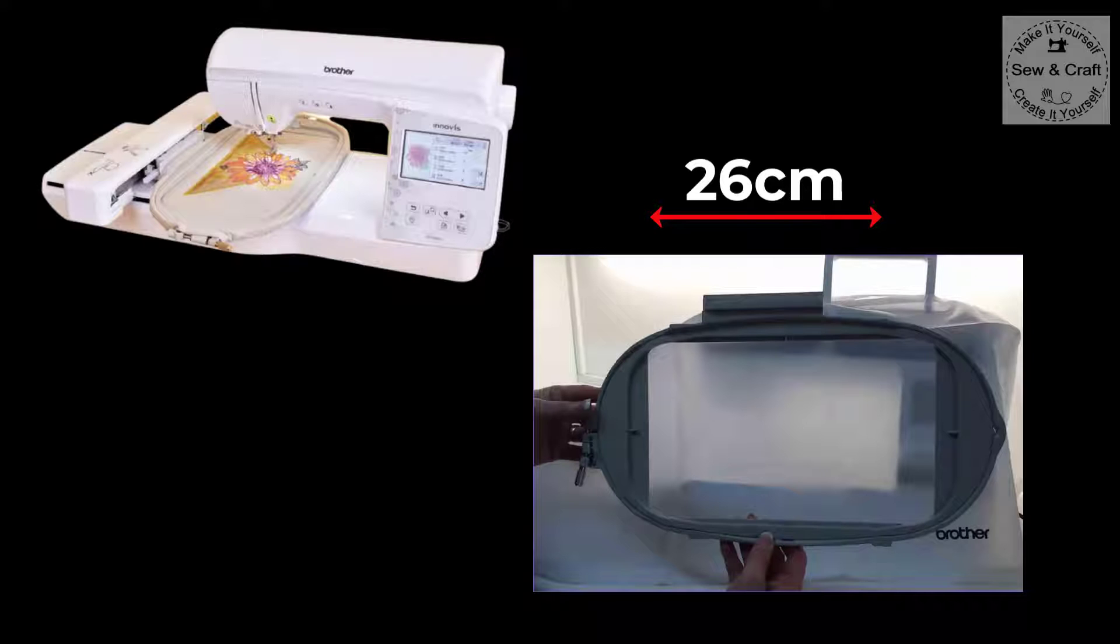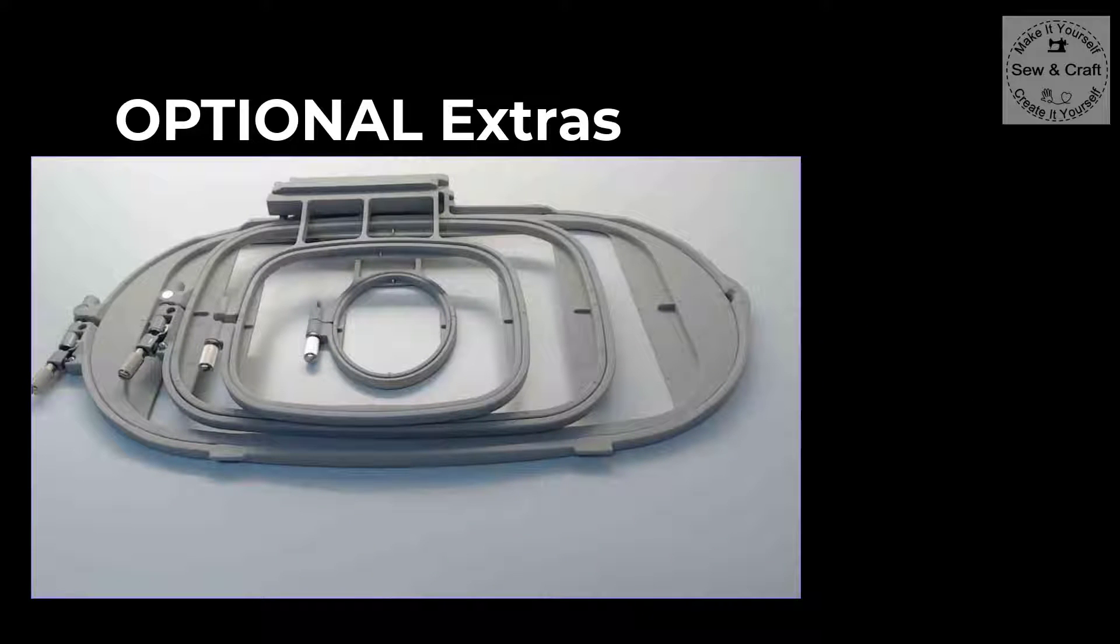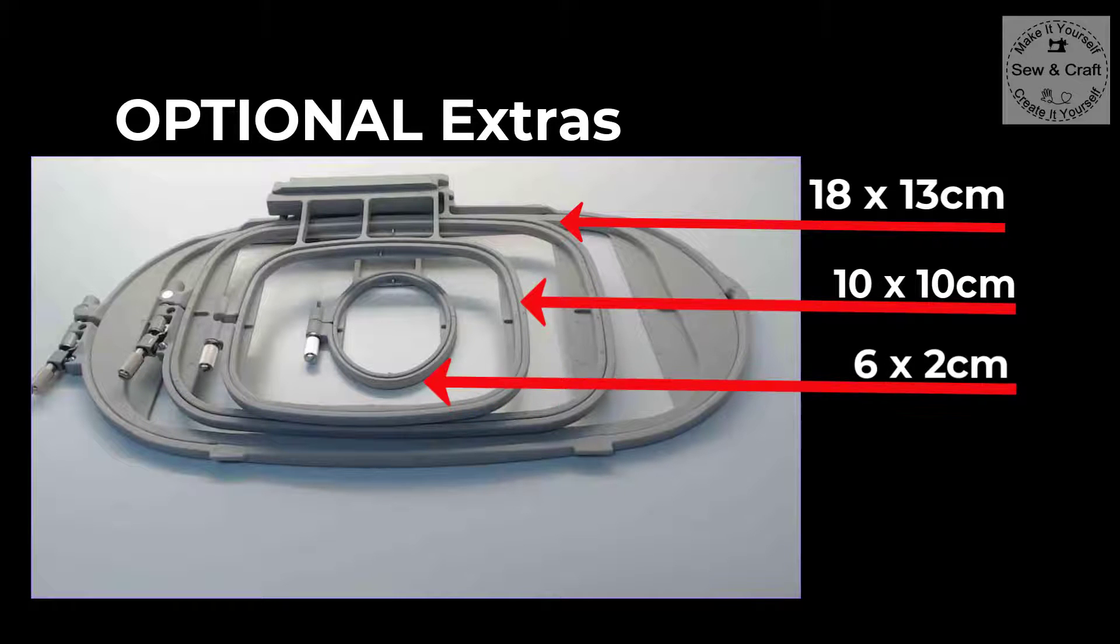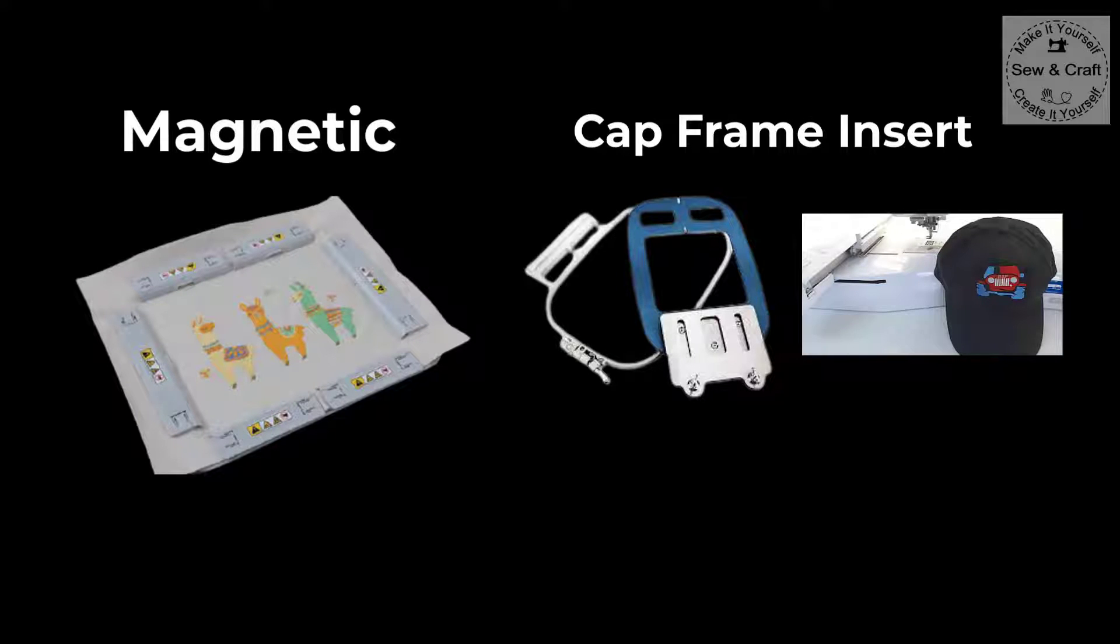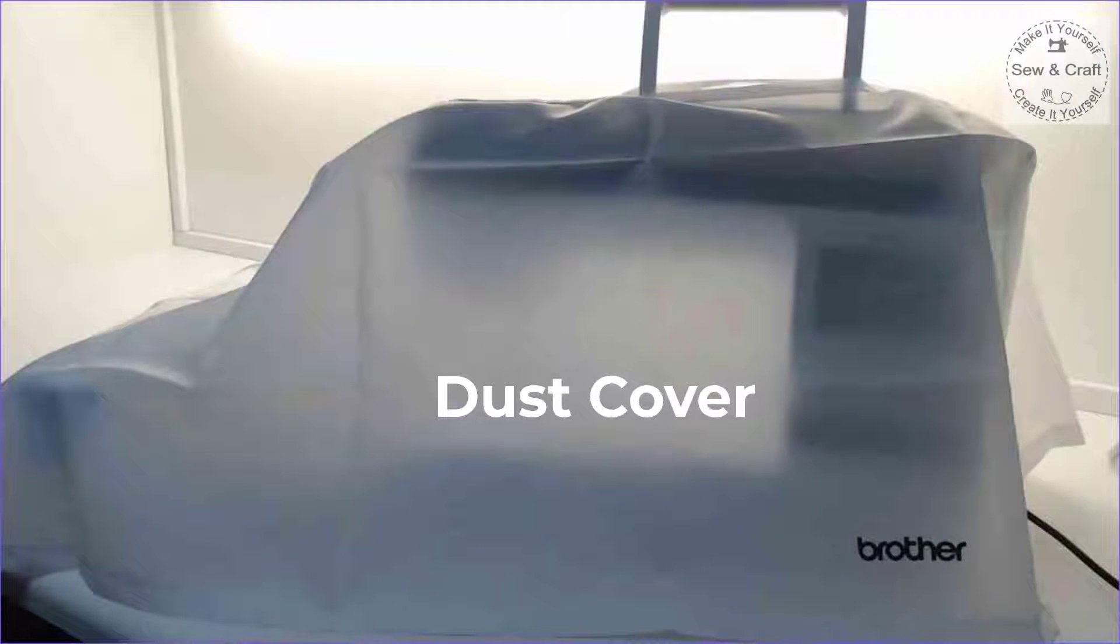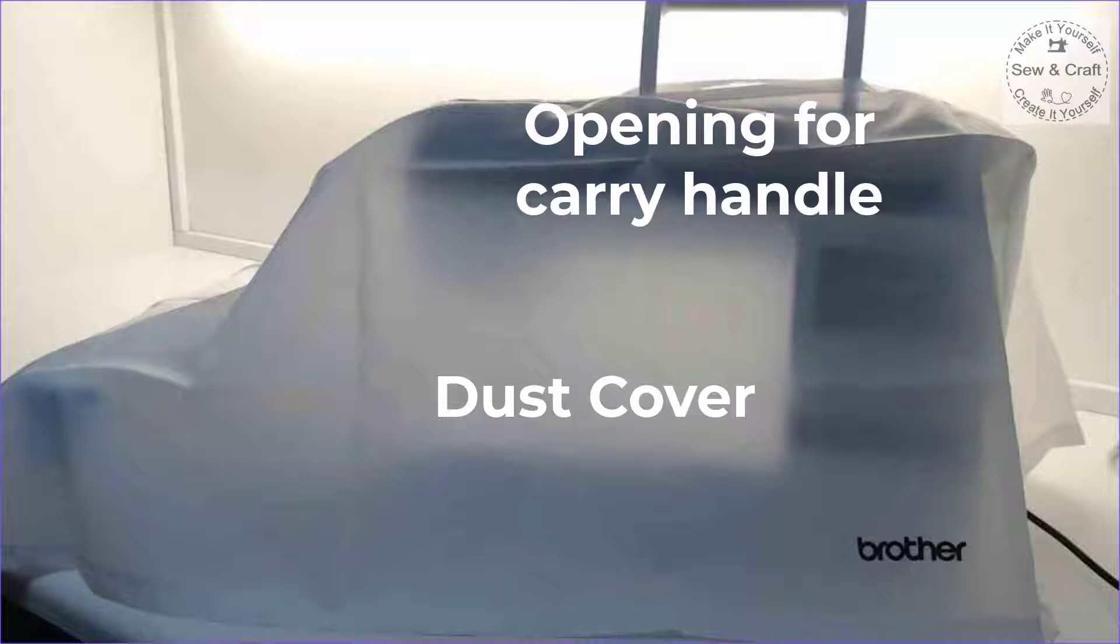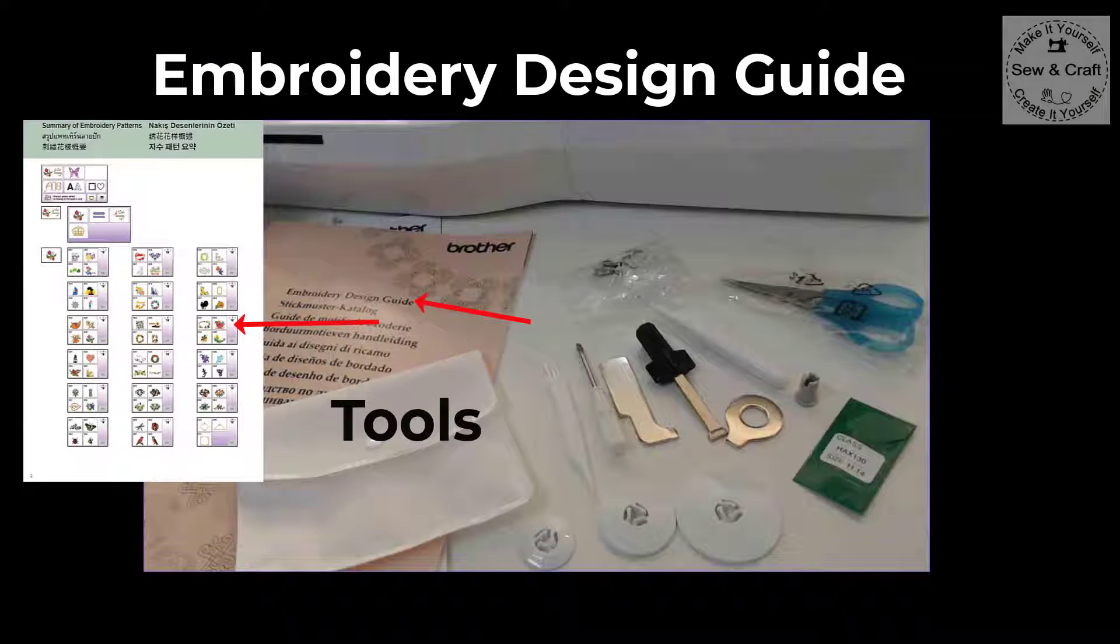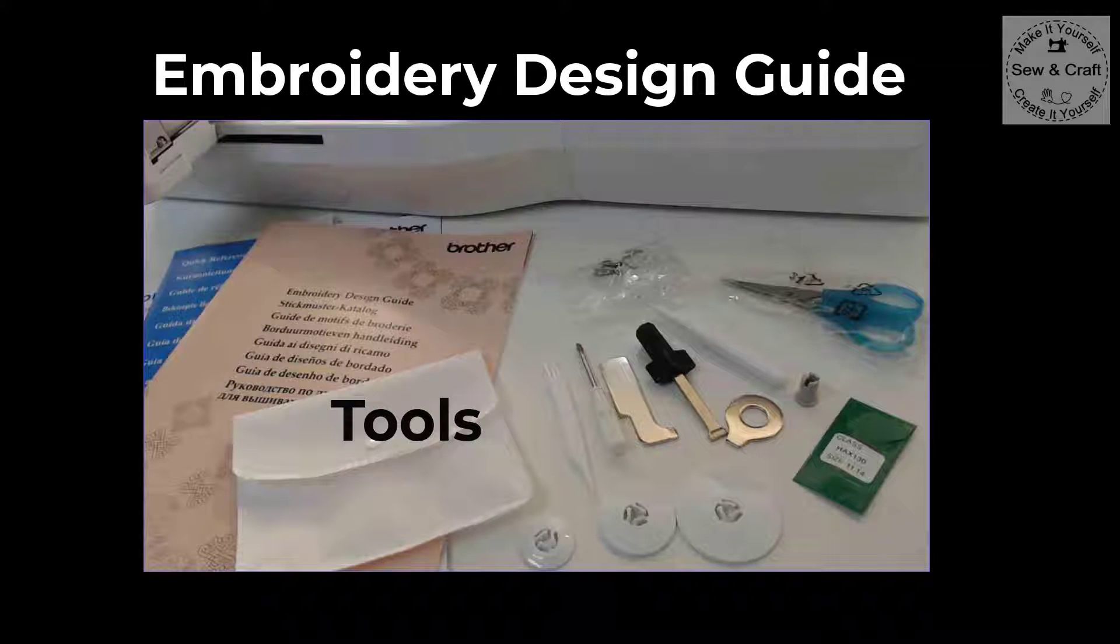The machine is supplied with the largest hoop which is 26 cm by 16 cm, and there are optional extra hoops or frames in different sizes for embroidery. There's also a magnetic frame as well as a cap frame insert for embroidering caps. If you'd like to know more about the cap frame insert, see the link below this video. There's a dust cover with a handy opening at the top so you can access the carry handle. There's an embroidery design guide that features full color pictures of all the designs built on the machine, plus a little set of tools you'll require while embroidering.